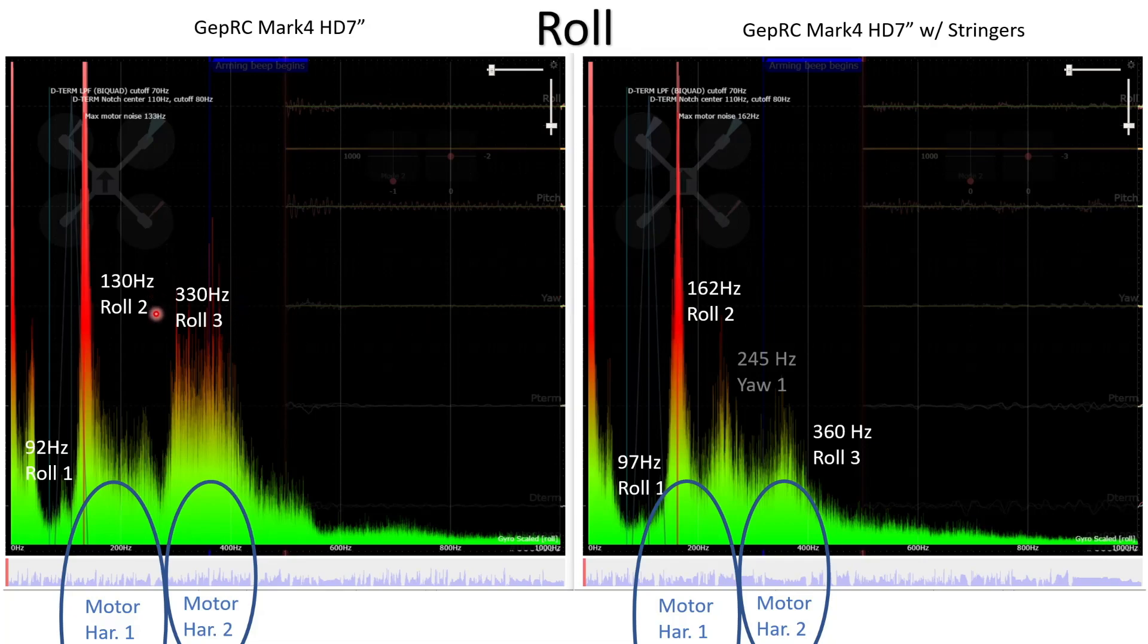If we look at the third roll mode at 330 Hz this was a sort of broad noisy mode before the stringers were fitted and after the stringers were fitted you can see it's a much narrower smaller peak. This 245 Hz resonant frequency here is actually coupled in from the yaw axis so we'll talk more about that when we discuss the yaw modes later on.